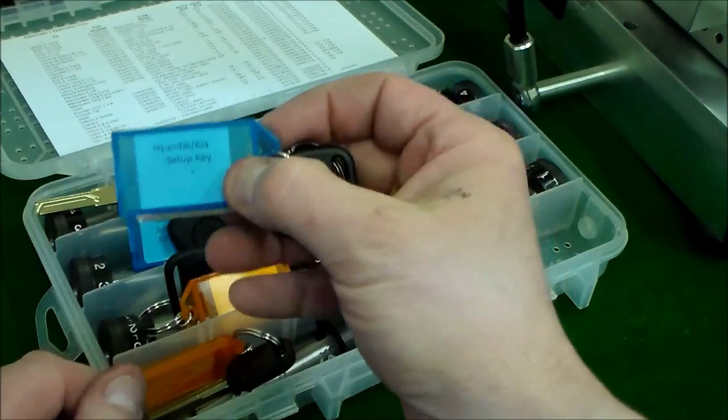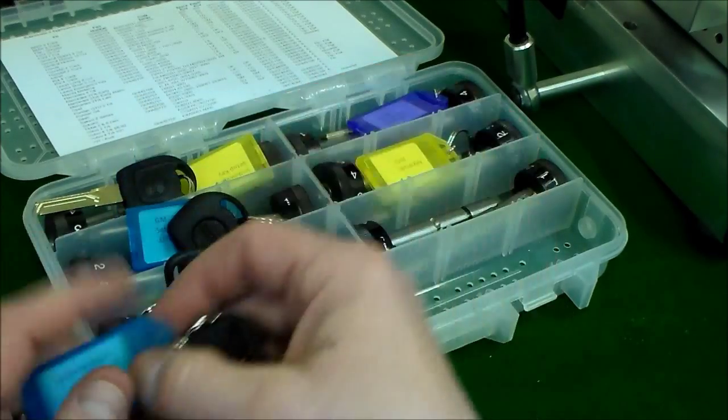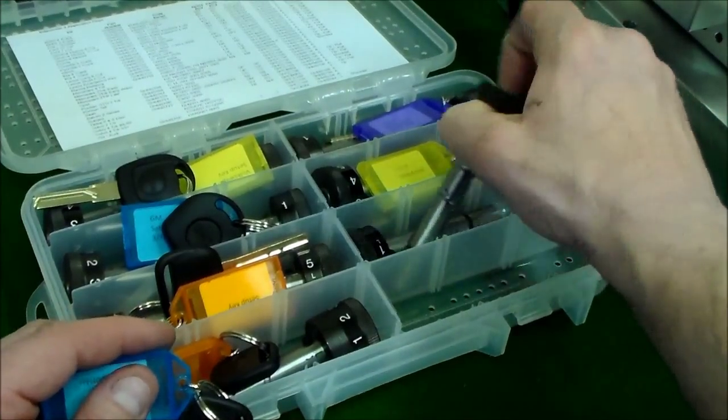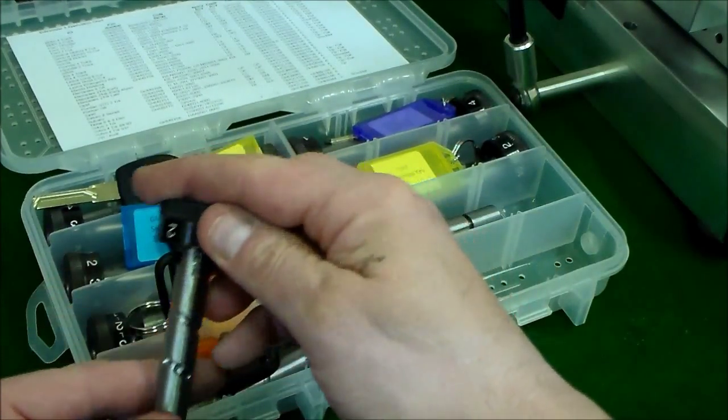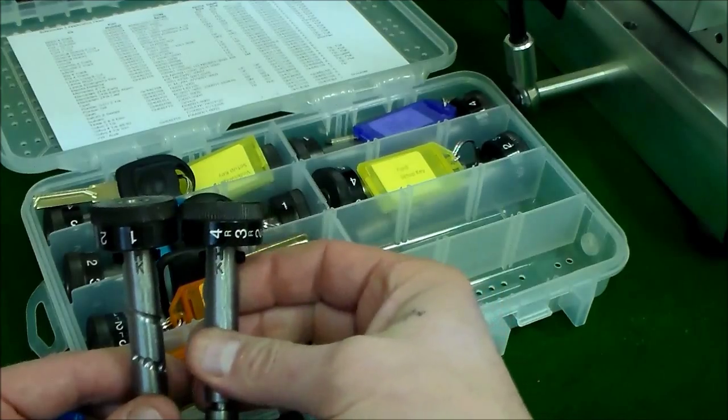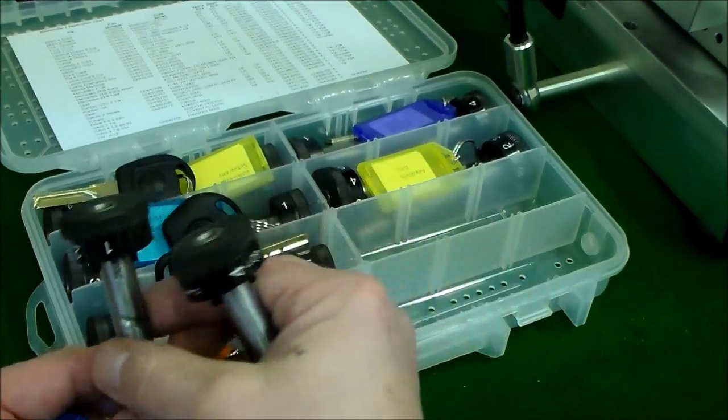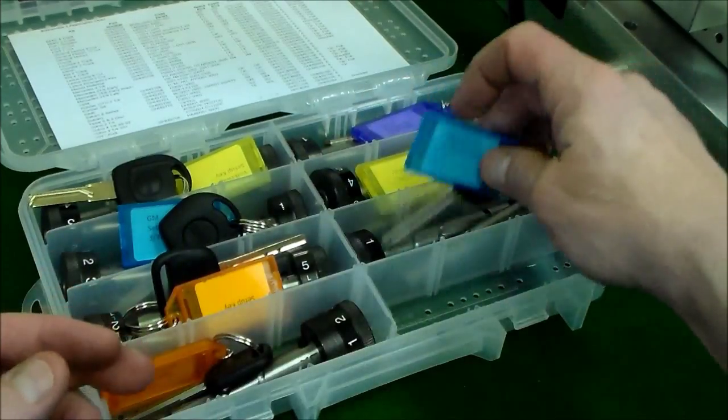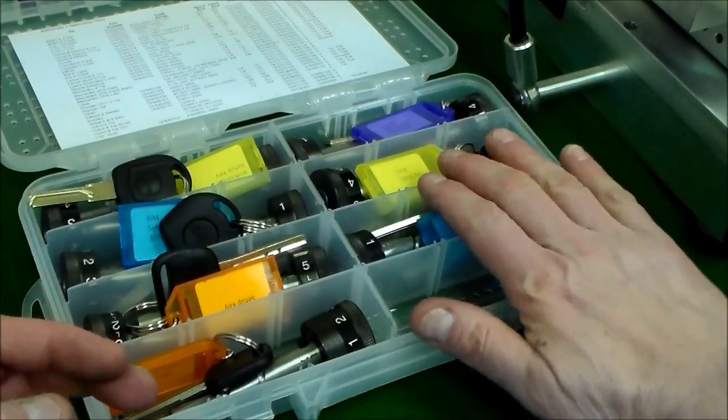Also in here, we're going to find the Hyundai Kia setup key. This is Hyundai and Kia 4-track. And that pair of rods is marked HK for Hyundai and Kia. There is more than one Hyundai Kia rod set. The one that comes with the machine, again, is for the 4-track.